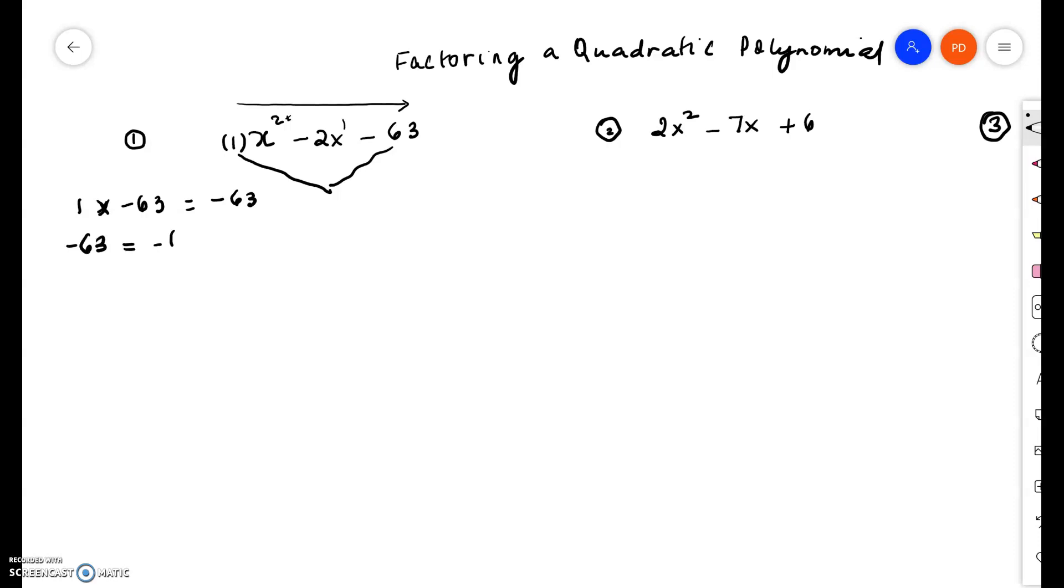So now let us look at negative 63. Obviously, the most basic one would be negative 63 times 1 or negative 1 times 63. But when you add up the two factors,